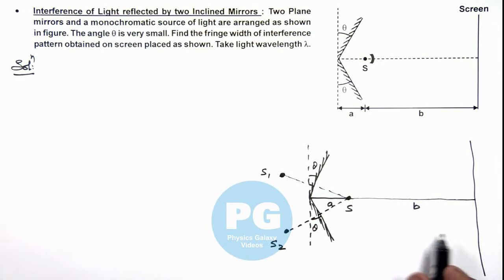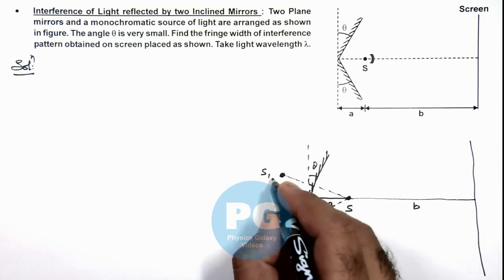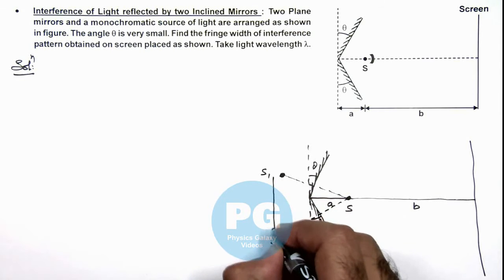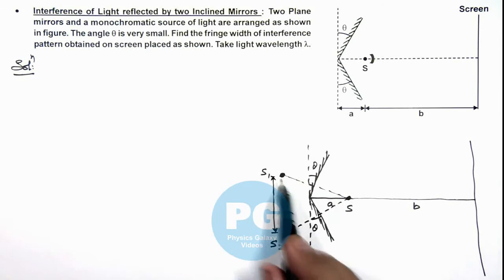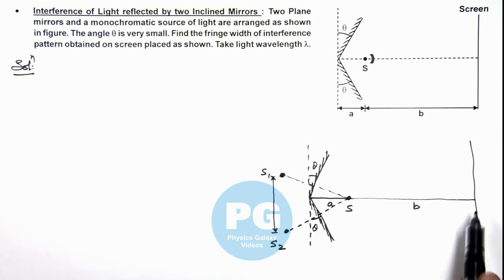So for this screen, these are the two sources from where monochromatic coherent light beams are incident. And the separation between S1 and S2 can be taken as capital D from where the light is coming.